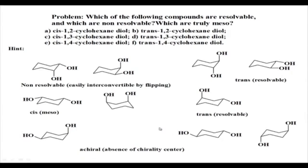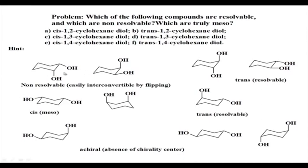We have already worked out some of these problems — cis-1,2-cyclohexanediol and trans-1,2-cyclohexanediol. If you are asked to draw the preferred conformation, which one is resolvable, which one is non-resolvable, which one is truly a meso compound, and which ones are optically active — draw the conformations. The cis system exists in two forms which are mirror images of each other and are easily convertible by flipping, so they remain as a non-resolvable DL pair.